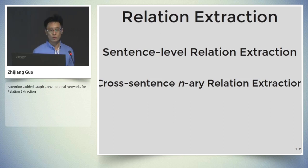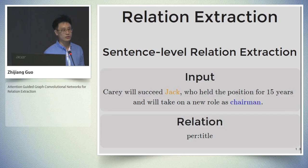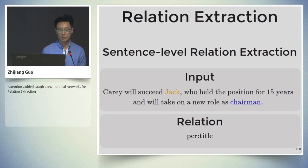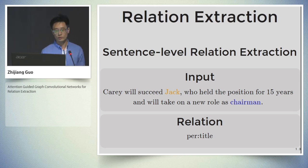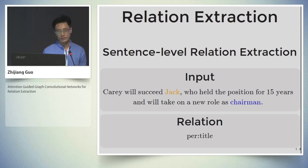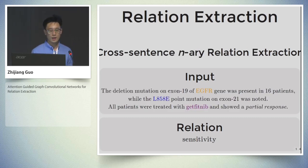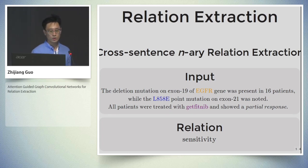In this work we mainly focus on two types of relation extraction tasks. The first type is sentence-level relation extraction and the second type is cross-sentence n-ary relation extraction. For the first type, the input consists of one sentence together with two given entities. Here the first entity is Jack and the second entity is chairman. We want to predict the relation between these two entities — here the relation is person-title, which means Jack is a person and his title is chairman.